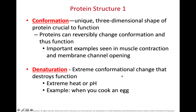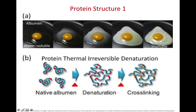Classic ways to denature proteins include extreme heat or extreme fluctuations in pH. A classic example is an egg being cooked — albumin is a protein in the white of the egg. As we heat up that albumin, it goes from colorless and dissolved in water to white, opaque, and no longer capable of being dissolved in water. By heating it up, we denatured it and changed its shape.